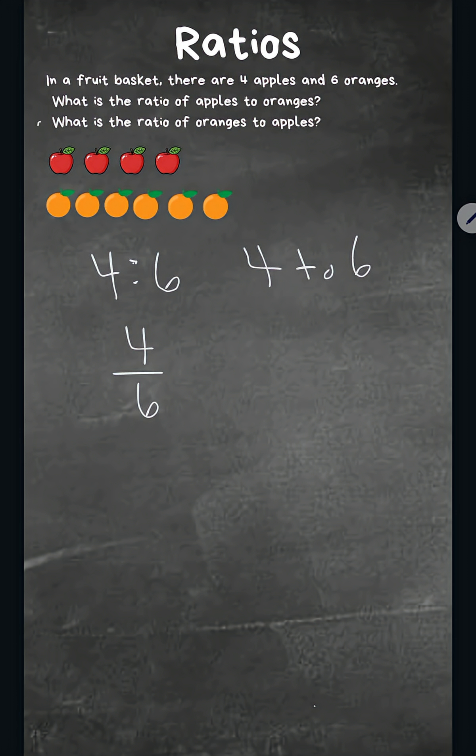Now, let's go over this. What is the ratio of oranges now to apples? Okay, again, we could have six, then a colon to four, or six to four, or in fraction form, six over four.